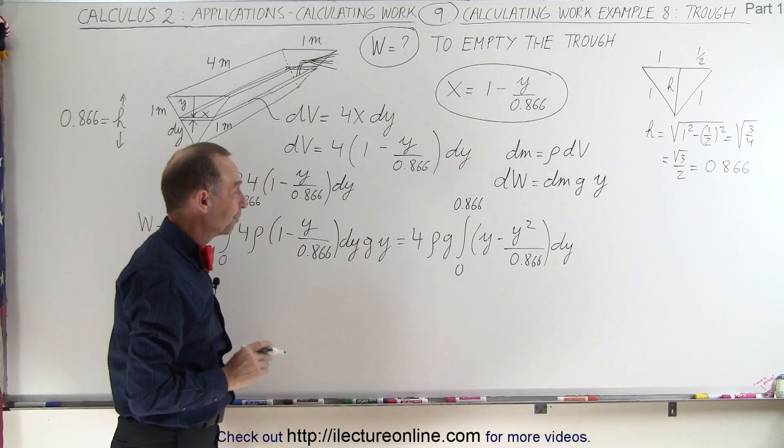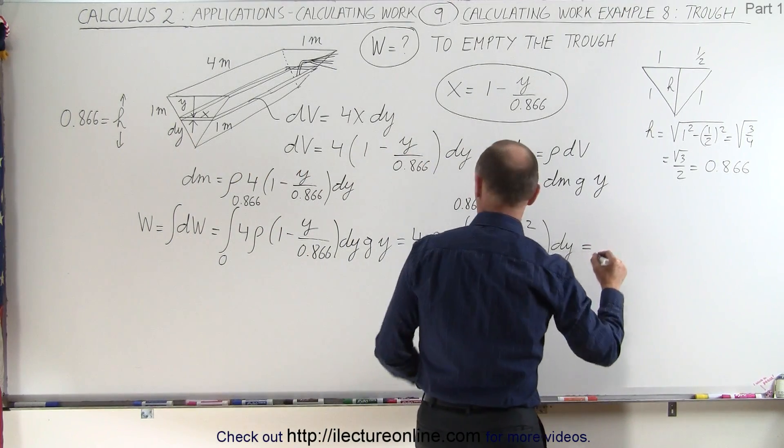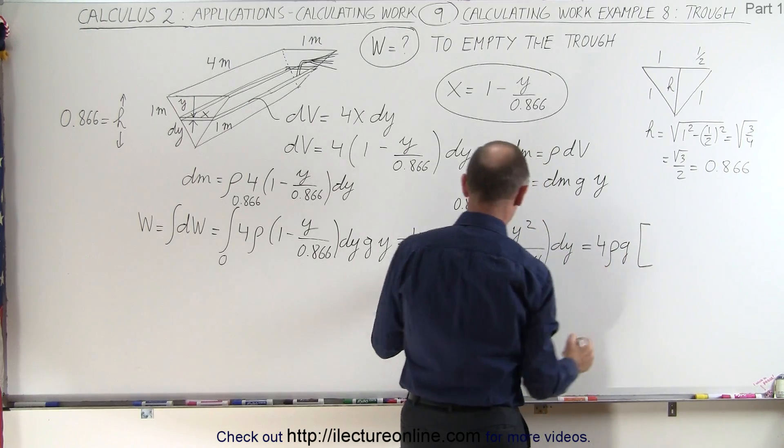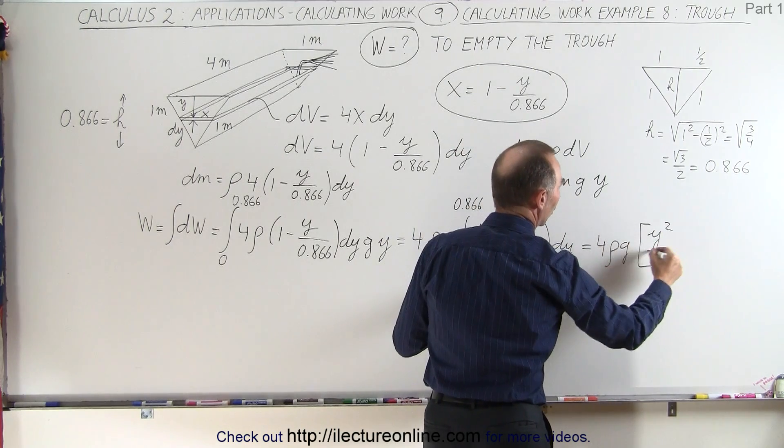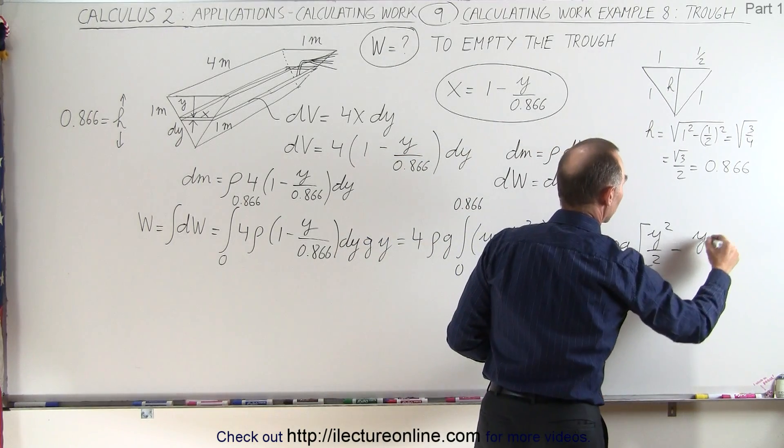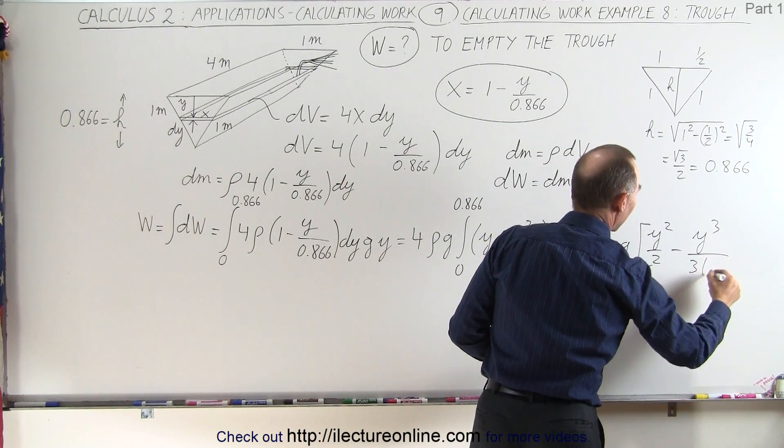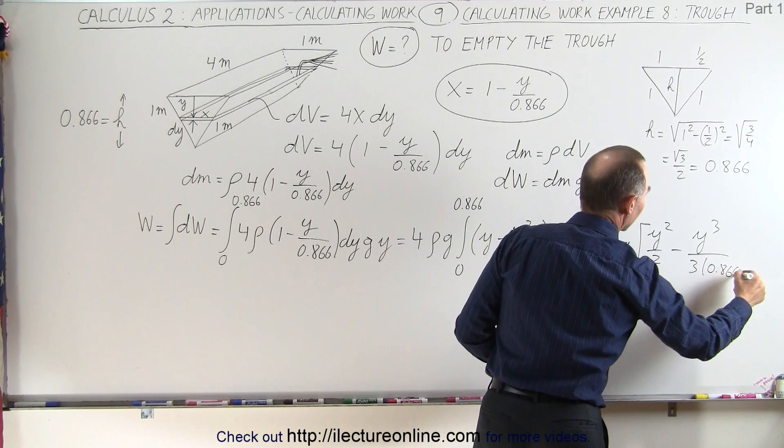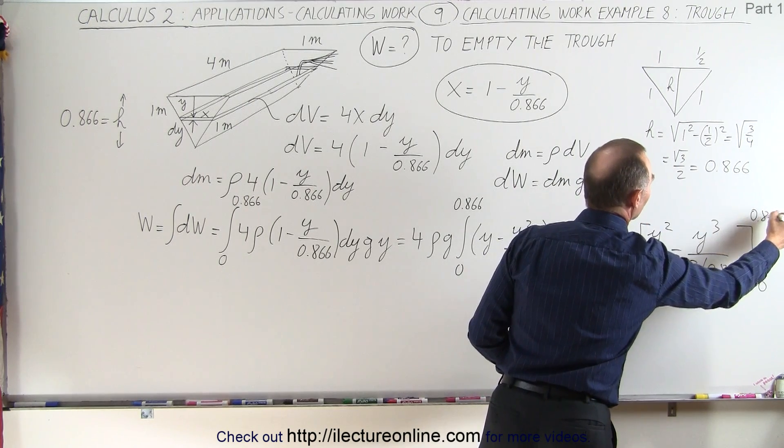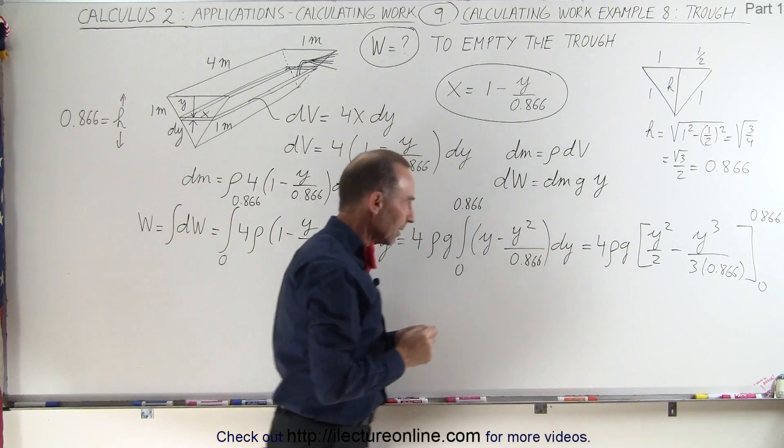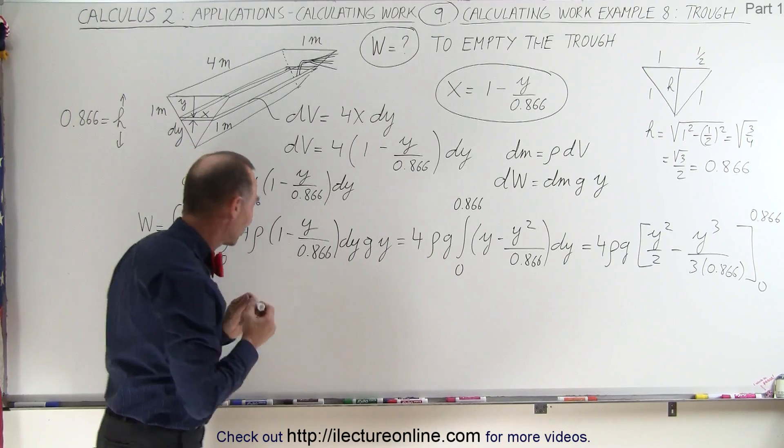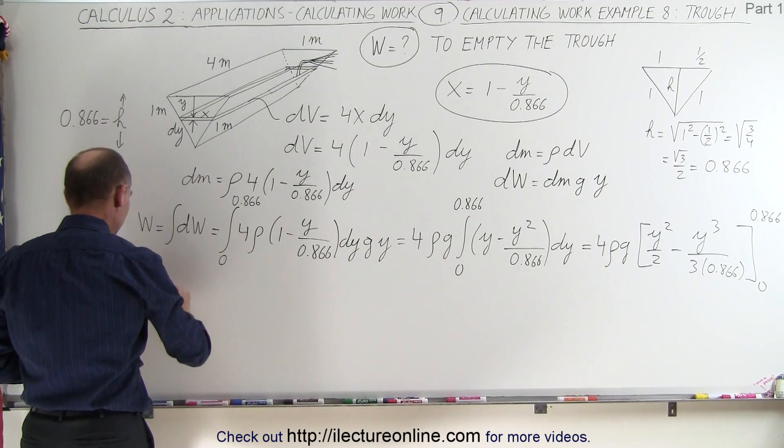Now we're ready to integrate this. So this becomes equal to 4 times the density times g times y squared over 2 minus y cubed over 3 times 0.866, evaluated from 0 to 0.866. Now it's not quite as bad as you think, because take a look.